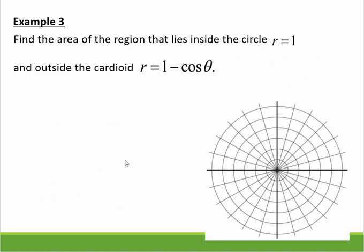Okay, find the area of the region inside the circle, but outside the cardioid. So let me graph this, inside my circle, r equals 1. I'm going to go by 1 halves, just because my radius is 1 here. Okay, so I'm going by halves, since that's a fairly small radius.